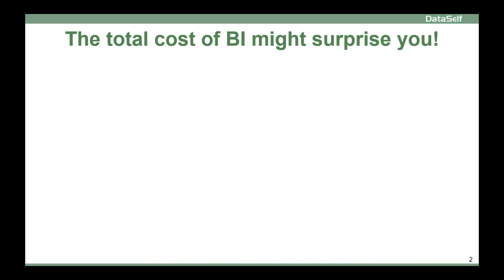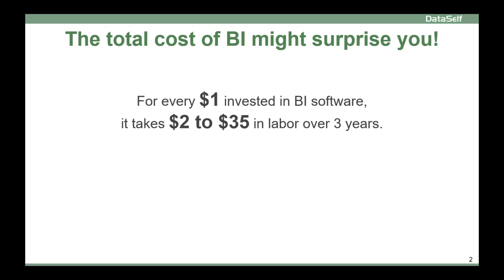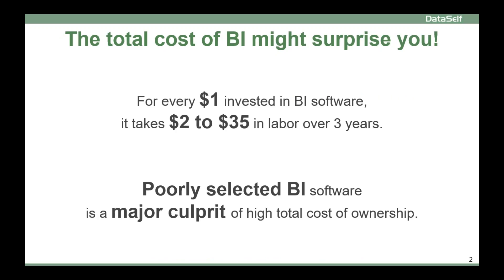Now, the total cost of BI might surprise you. There are two recent surveys that cover about 15 different organizations, and the findings are that for every dollar an organization invests in BI software, on average, it takes $2 to $35 in labor over three years to get the job done. The point is, most of the cost of BI is usually in labor after you buy the software, and a poorly selected BI software is a major culprit of high total cost of ownership.